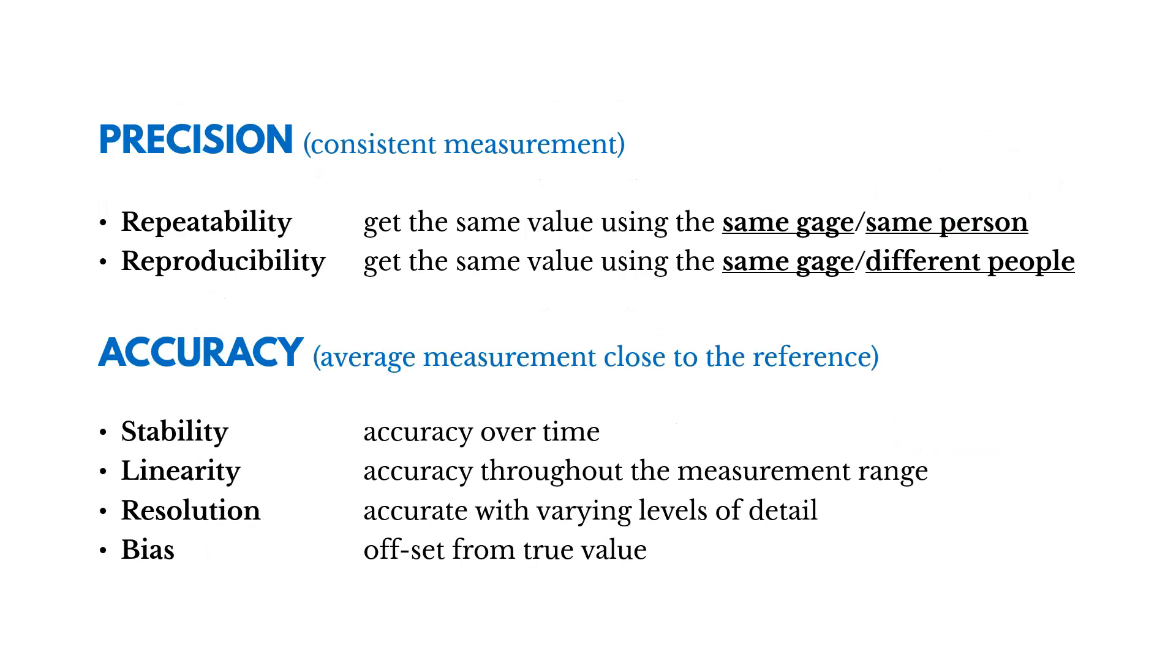Now, precision and accuracy are our high-level goals. We can dive deeper into specific goals within each of those categories, precision and accuracy. So with precision, we seek for repeatability, getting the same value using the same gauge and the same person, making sure it's repeatable.